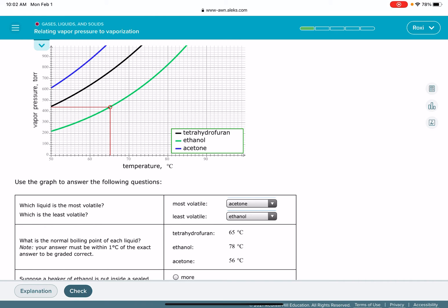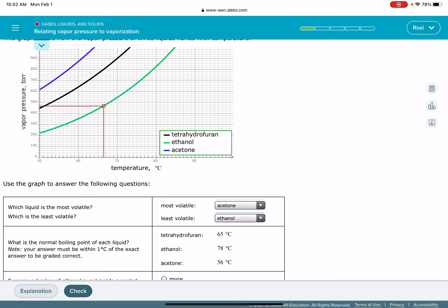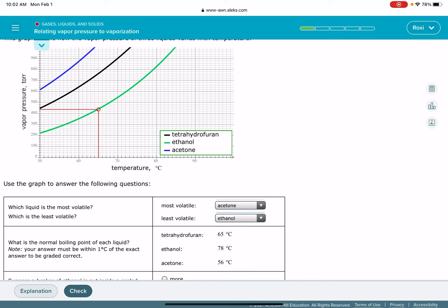And at 65 degrees C, the vapor pressure of ethanol is 440 torr. So I'm reading across the graph, finding the vapor pressure that corresponds to the temperature.